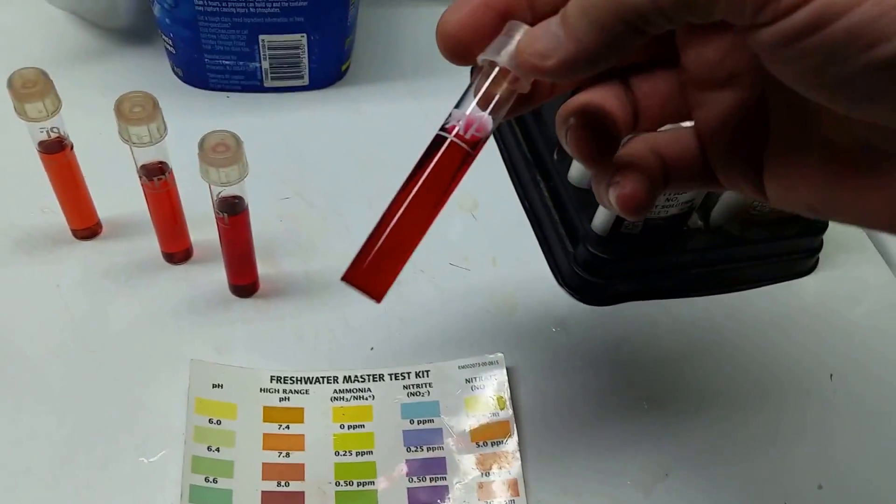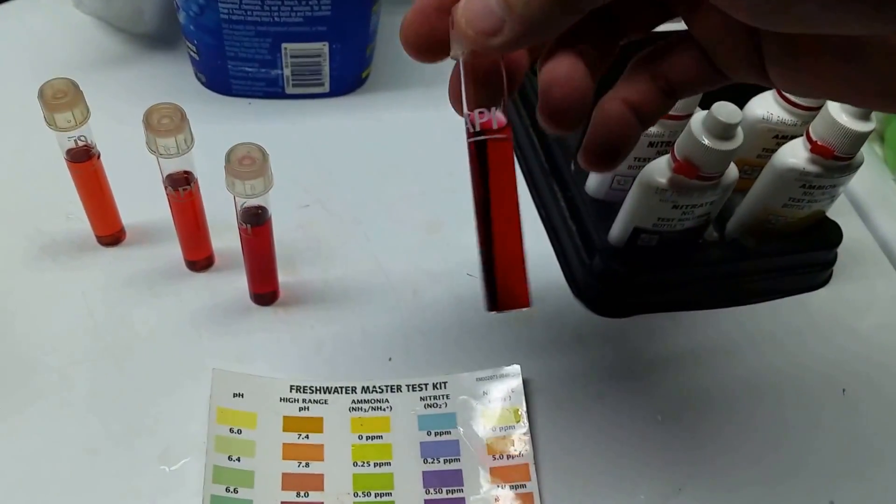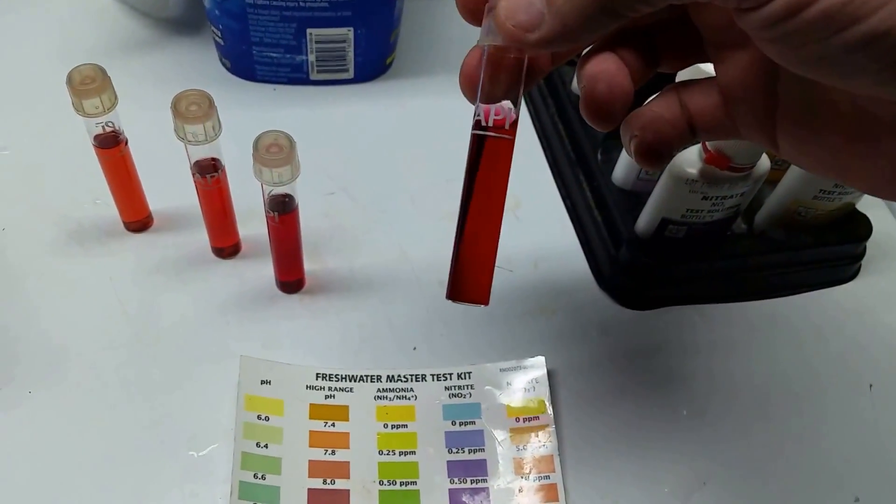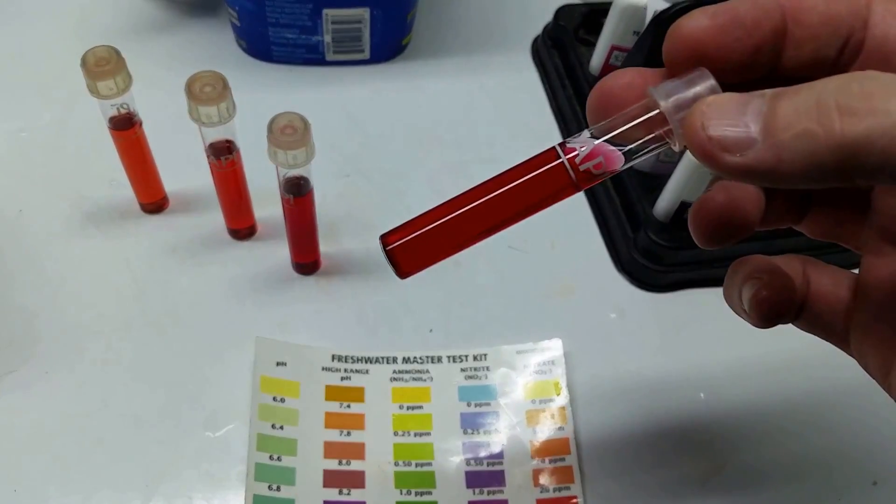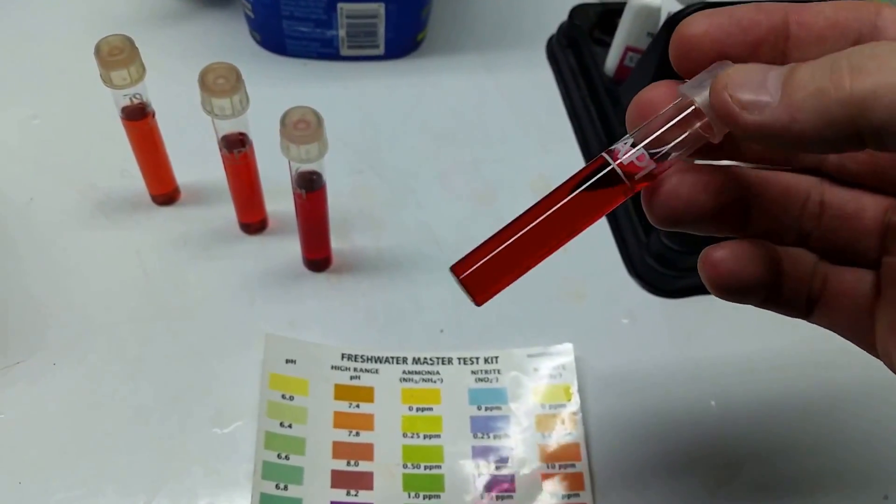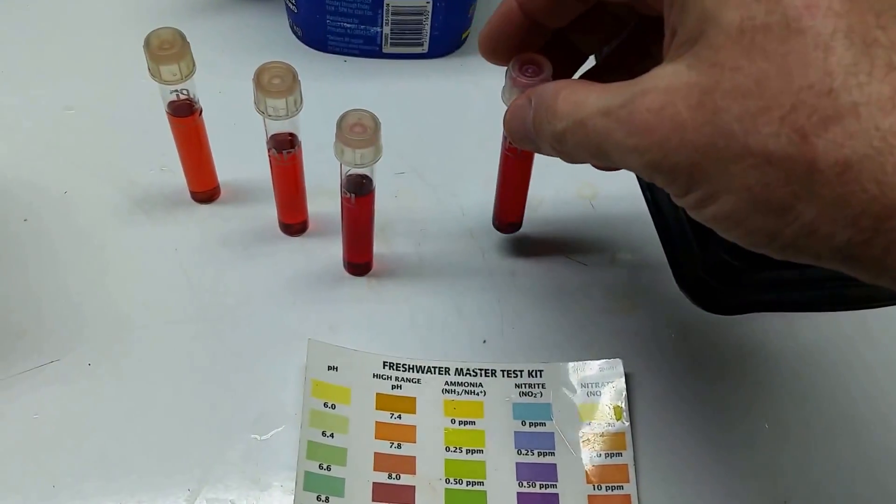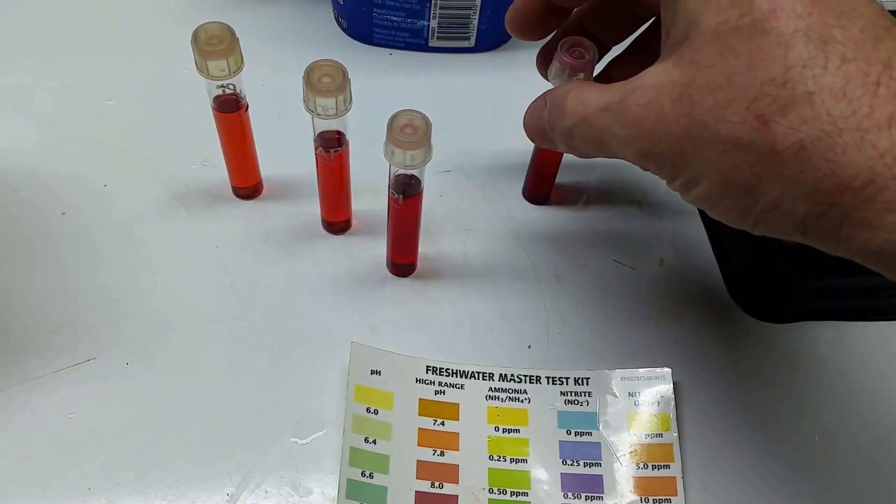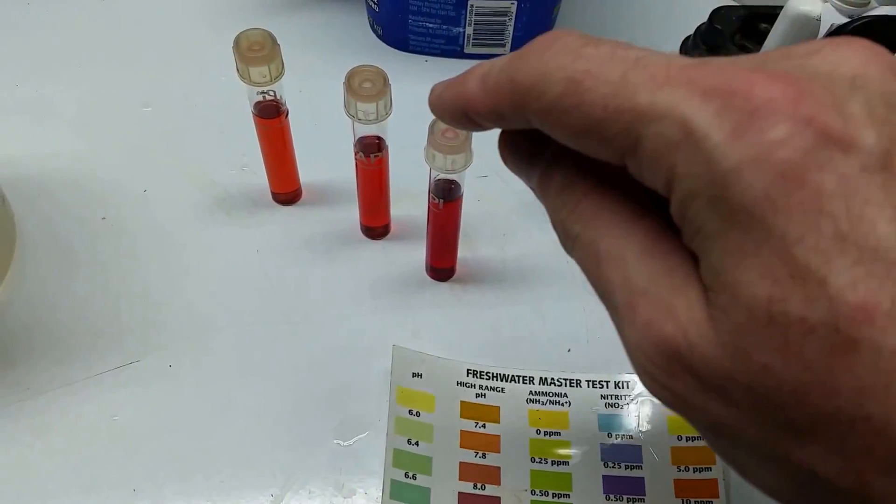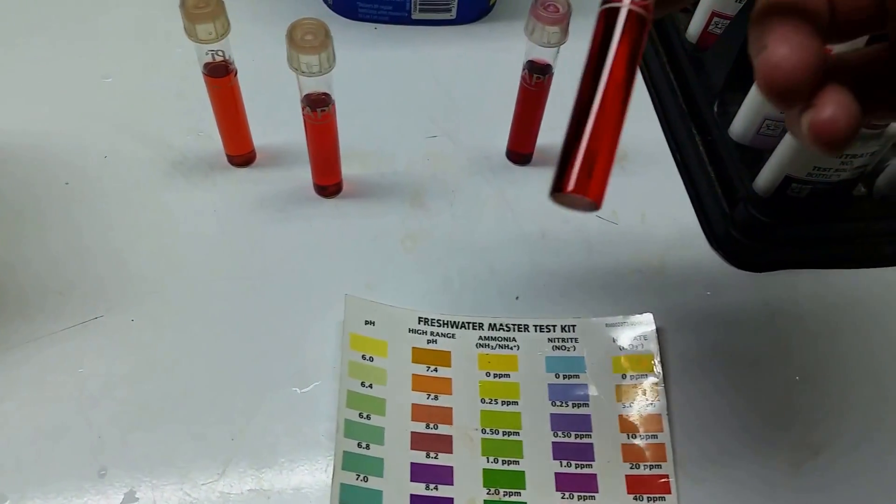This is the next tank I'm going to be doing a water change on, and you can see that vial is indeed pretty red. Now, this vial has also been sitting here for about 30 or 40 minutes and they tend to continue darkening a little over time. So this vial and this vial are a little older; they've been sitting here for a little while longer.